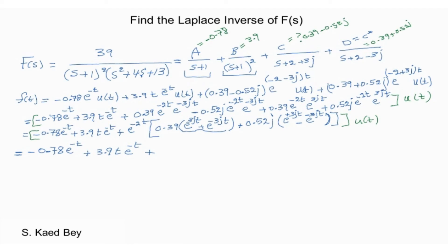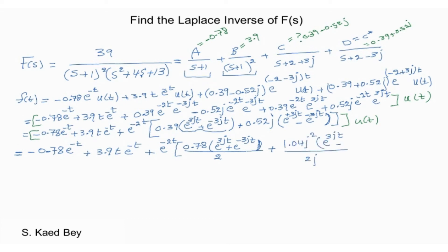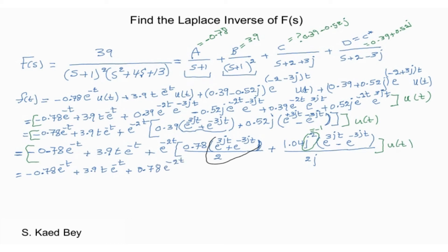Multiplying the numerator and the denominator of the last two terms of f of t by 2 and 2j respectively, we get the Euler identities for sine and cosine. We can then rewrite the inverse Laplace of our model as follows.